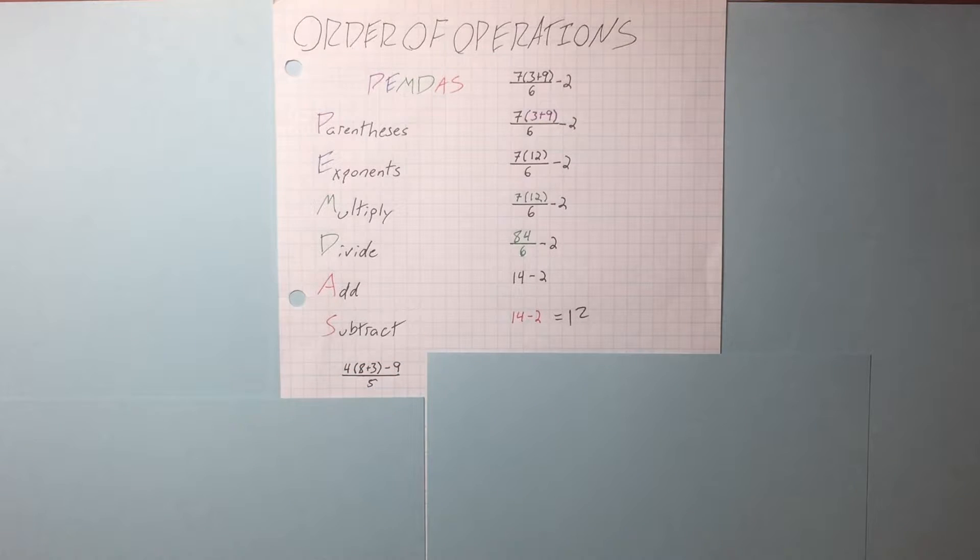Let's try this other example here. First thing we're going to do is parentheses, multiplication, division. We need to divide the 5 into the 44 and the 5 into the 9, like this. Then we do our subtraction.